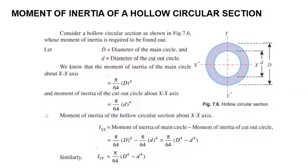We can easily get the moment of inertia of a hollow circular section. The diameter of the outer circle is capital D and the diameter of the inner circle is small d. For the hollow circular section, IXX equals πD power 4 by 64 minus πd power 4 by 64, which simplifies to IXX equals π by 64 times (D power 4 minus d power 4). IYY is the same as IXX since they are symmetrical and the centroid of the outer circle coincides with the centroid of the inner circle.